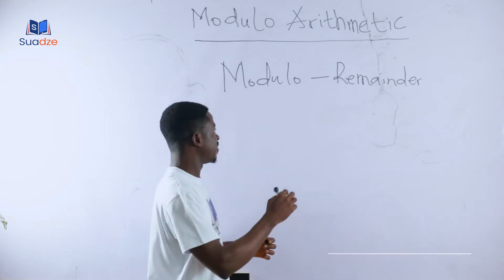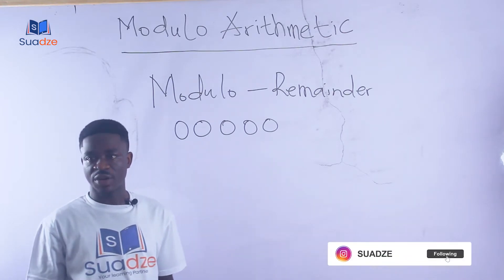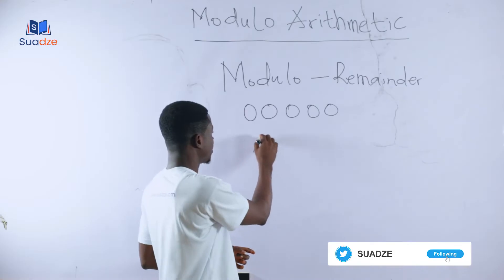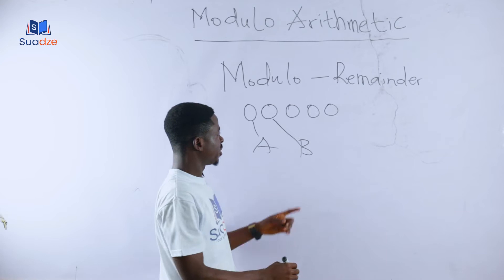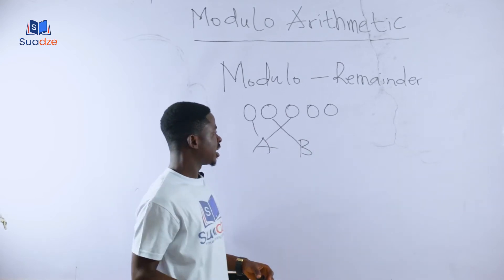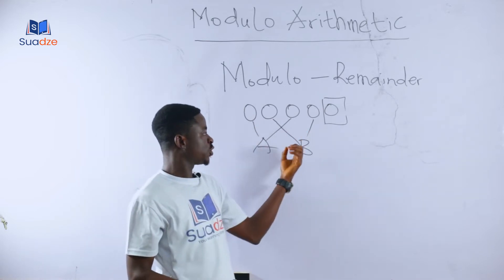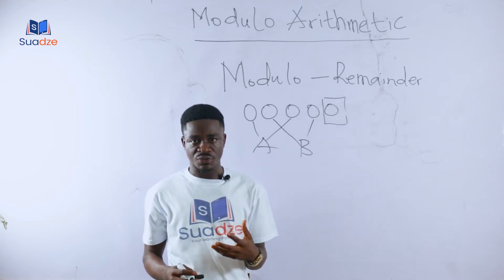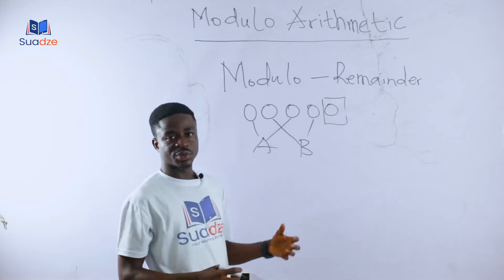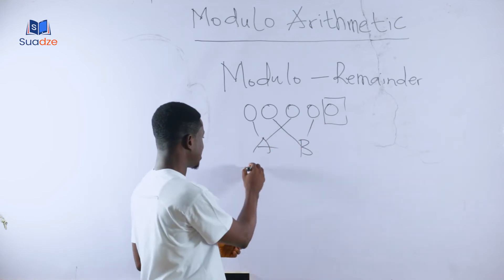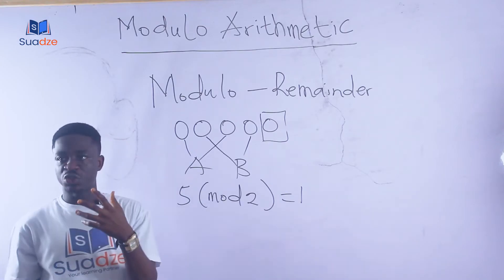Let's say we have five oranges and two people, A and B, are supposed to share them. We give two oranges to A and two to B, and we are left with one that cannot be shared. So the remainder is one, and we can say that five modulo two gives us one. In modulo arithmetic, we are interested in the remainder, not how much each person receives.